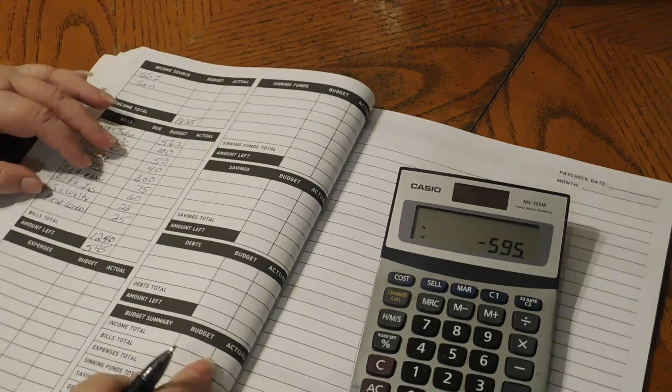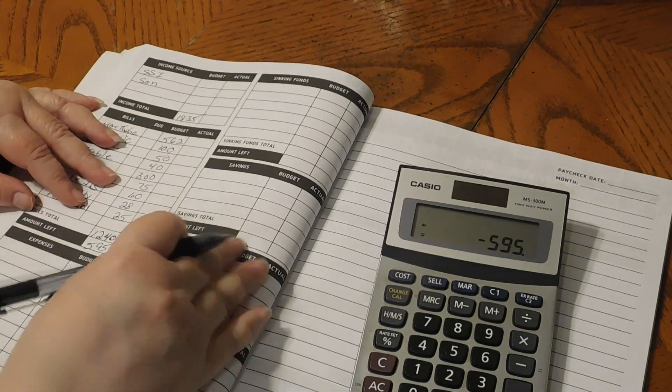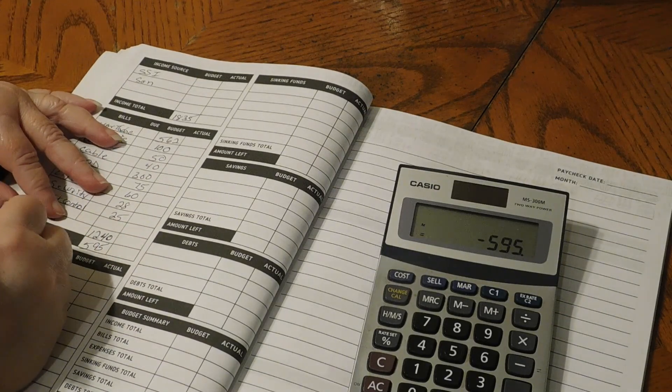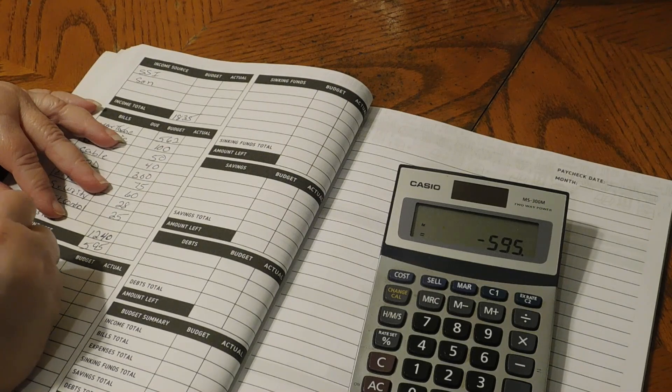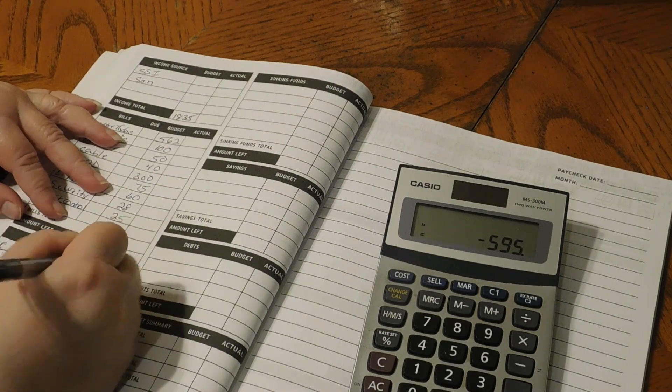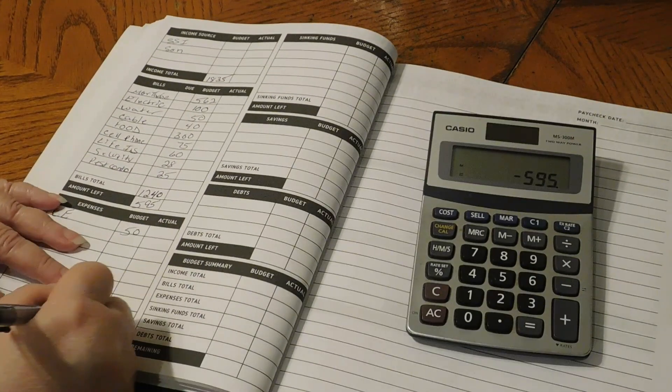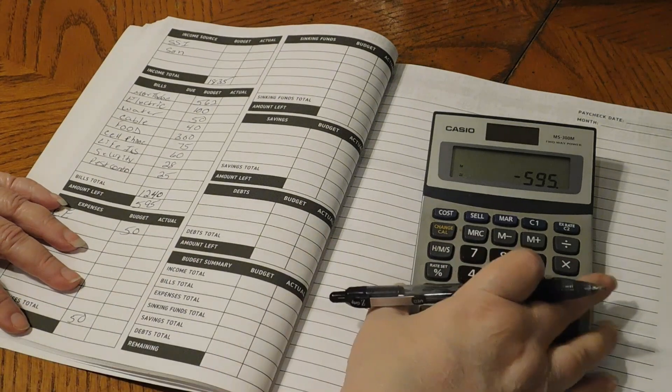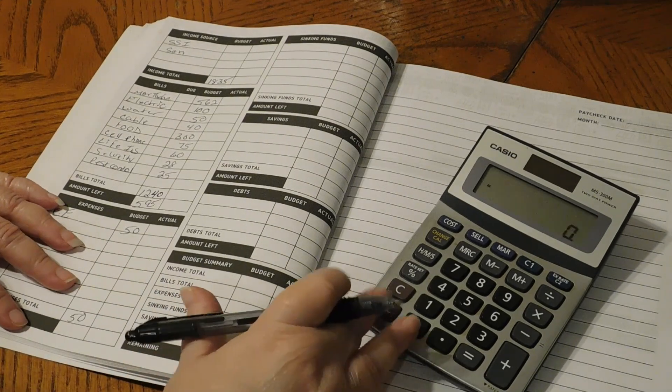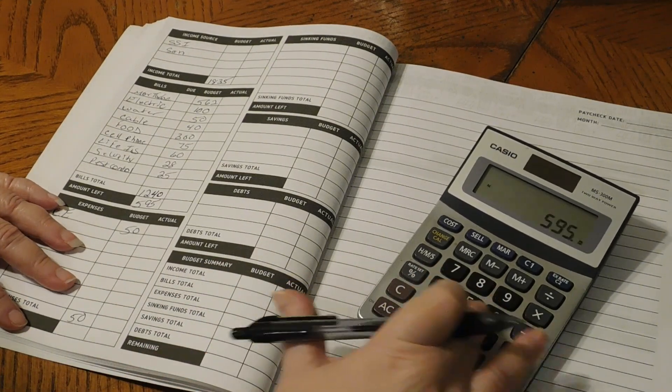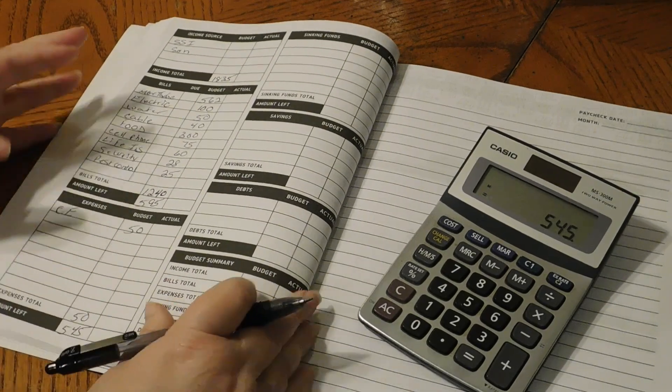Our expenses, we are going to do the cash envelopes, and they are going to get $50. Minus $50 gives us $545.